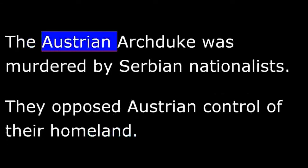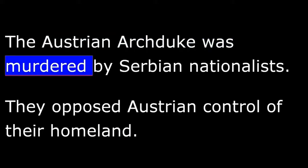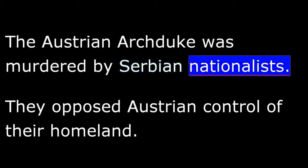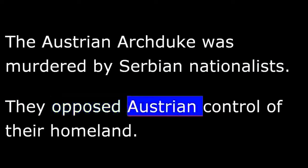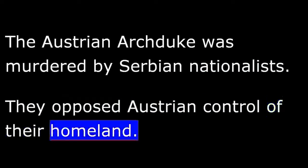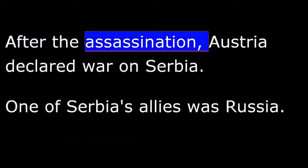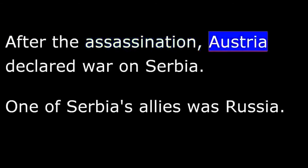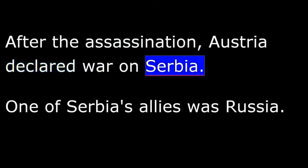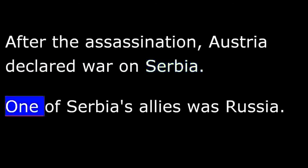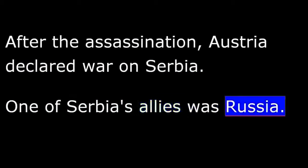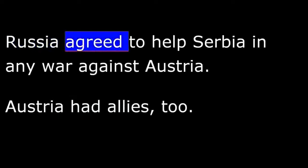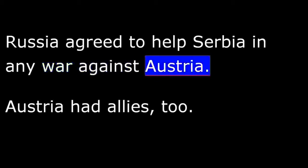The Austrian Archduke was murdered by Serbian nationalists. They opposed Austrian control of their homeland. After the assassination, Austria declared war on Serbia. One of Serbia's allies was Russia, and Russia agreed to help Serbia in any war against Austria.